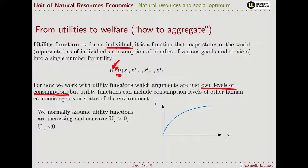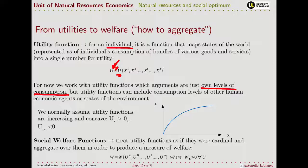Two important assumptions we make are that utility functions are increasing and concave. The first derivative — the derivative of utility with respect to x, where x is consumption — is greater than zero. But the second derivative is negative. So the utility function has a shape that is increasing but at a decreasing rate. The more you consume, the more your utility increases. But, for example, consuming 10 cans of beer is better than 5, and 20 is still better, but 30 — the increment in utility is marginally decreasing.